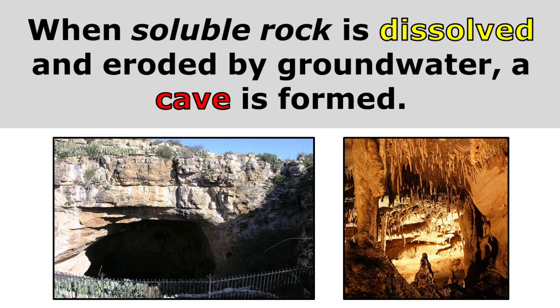When soluble rock is dissolved and eroded by groundwater, a cave is formed. Even rocks like limestone, which can be dissolved by slightly acidic water, dissolve very slowly. It can take tens or even hundreds of thousands of years to form a cave.